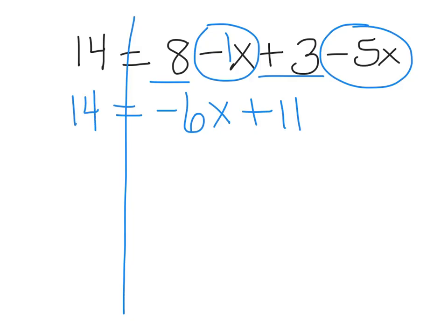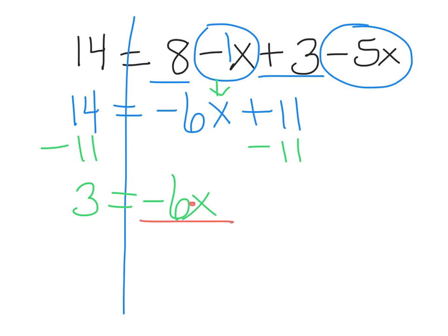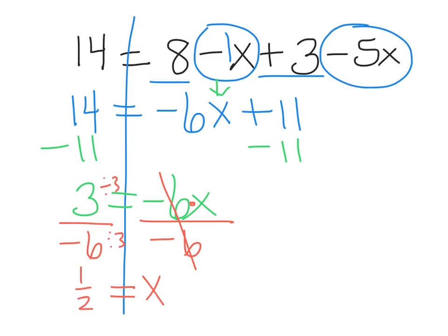I'm going to put my 14 on the other side. Now I'm going to try to get x alone, and I get rid of what's furthest from x first. So I'm going to subtract 11 from both sides, and I get 3 equals negative 6x. For the final step, I'm going to undo my multiplication by dividing both sides by negative 6. These cancel and I get x equals — 3 and 6 can both be divided by 3, so this simplifies to 1 half. Positive divided by negative is negative, so the answer is negative 1 half equals x.